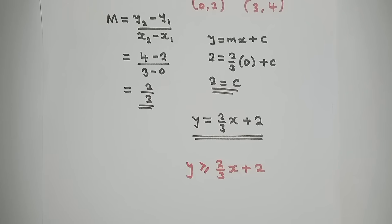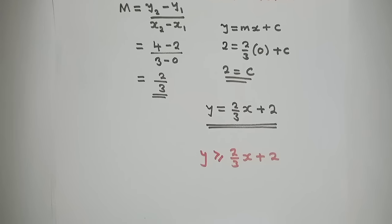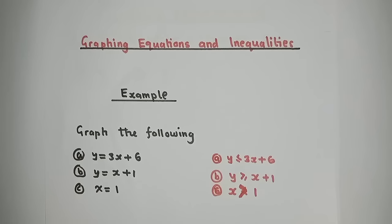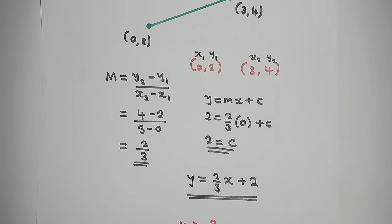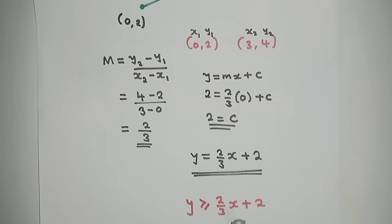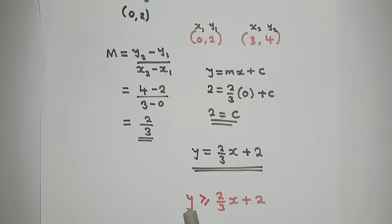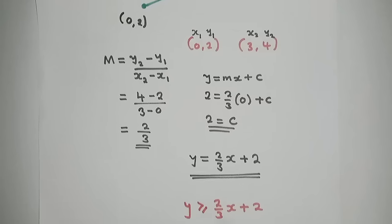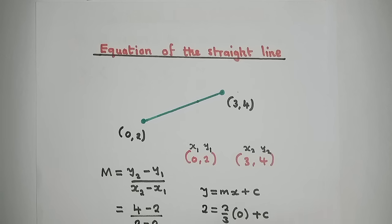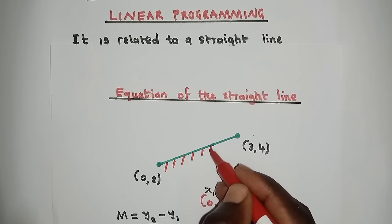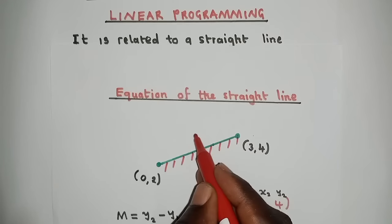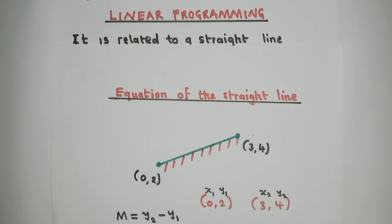Let's try to graph this. Before we graph, let me show you how shading works. If y is greater than or equal to (2/3)x + 2, we shade the unwanted region, which is the bottom part, because the greater is up here and that is what we want. The less is not what we want, so we shade below.